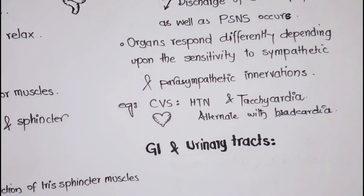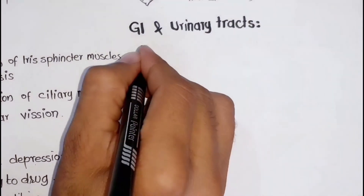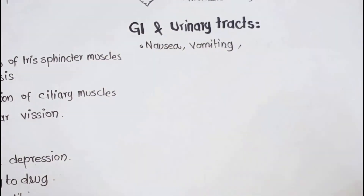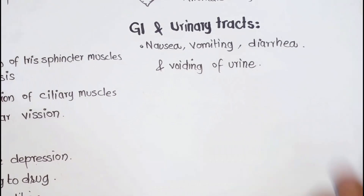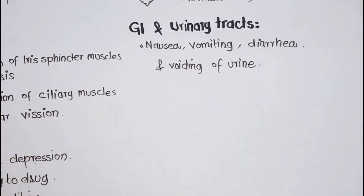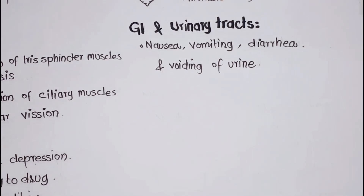In contrast, in the GI and urinary tracts, the effects are largely parasympathomimetic, including nausea, vomiting, diarrhea, and voiding of urine. However, prolonged exposure of the ganglia to nicotinic agonists may result in depolarizing blockade, as discussed in the previous video on cholinergic agonists.